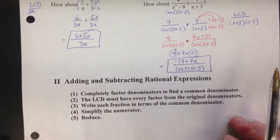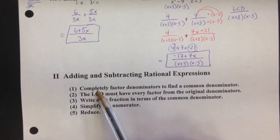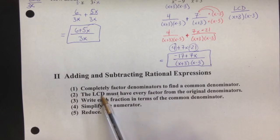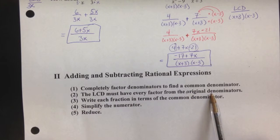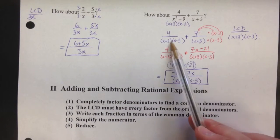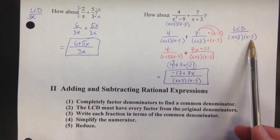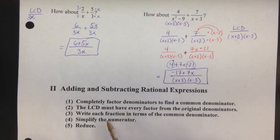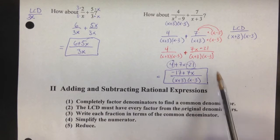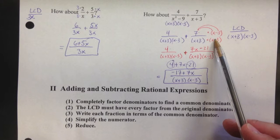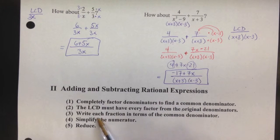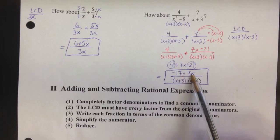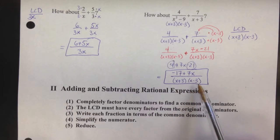The general steps for adding and subtracting rational expressions: First, completely factor denominators to find the LCD. The LCD must have every factor from the original denominators. Second, write each fraction in terms of the common denominator by multiplying top and bottom as needed. Third, simplify the numerator by combining like terms. Finally, reduce if you can.